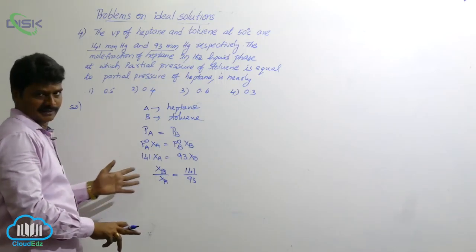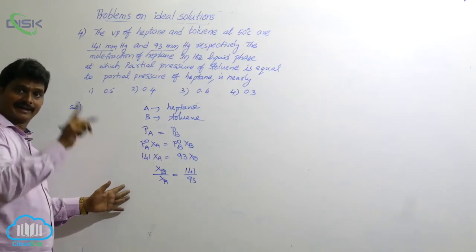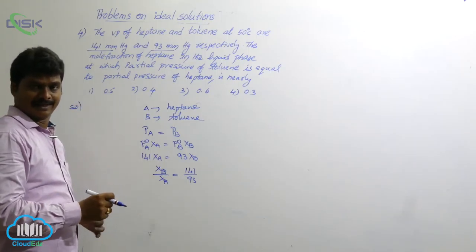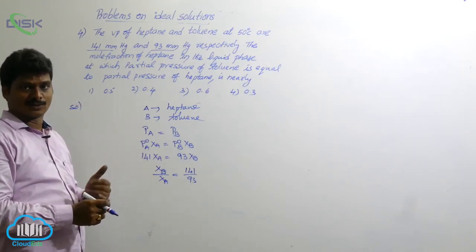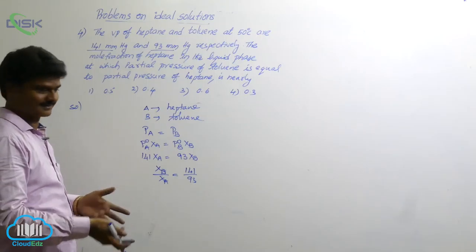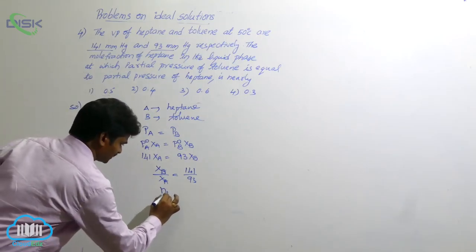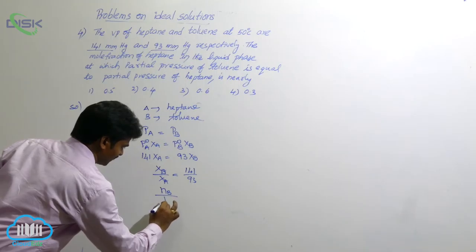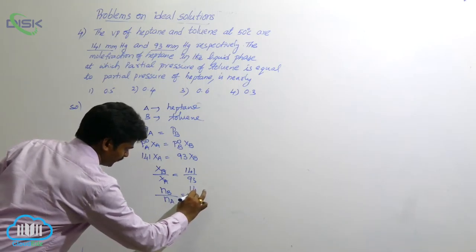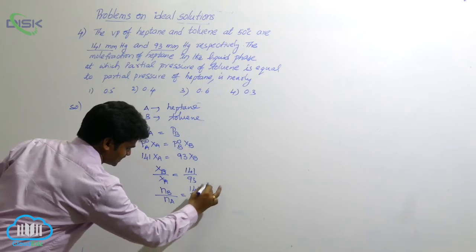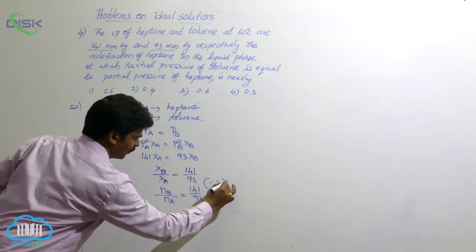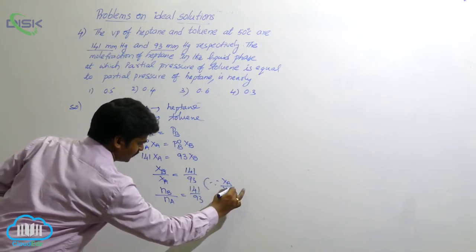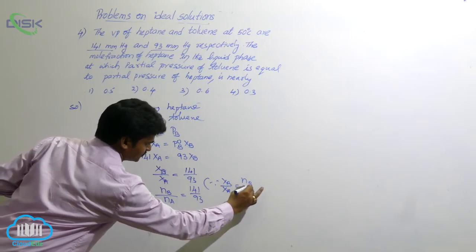This is the mole fraction ratio. Ratio of mole fractions is equal to ratio of moles. So, number of moles of B by number of moles of A equals to 141 by 93. Since here, what is the reason? Mole fractions ratio equals to moles ratio.